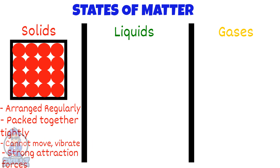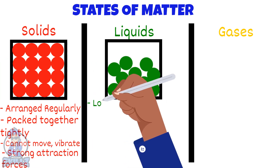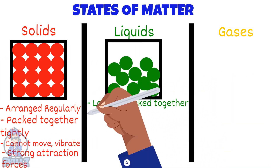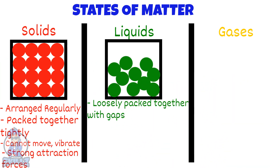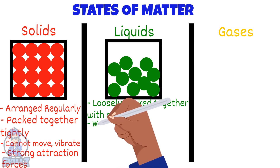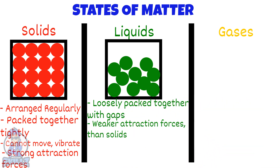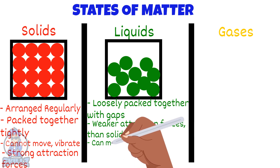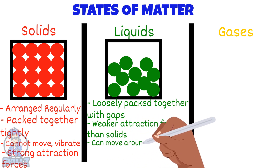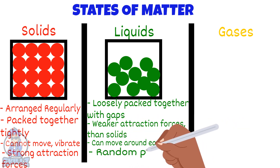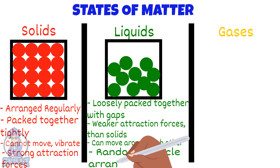Liquid particles are loosely packed. They are still touching but there are gaps between them. The forces between the particles are not as strong as that of solids, so particles can move around each other. This leads to the particle arrangement being random.